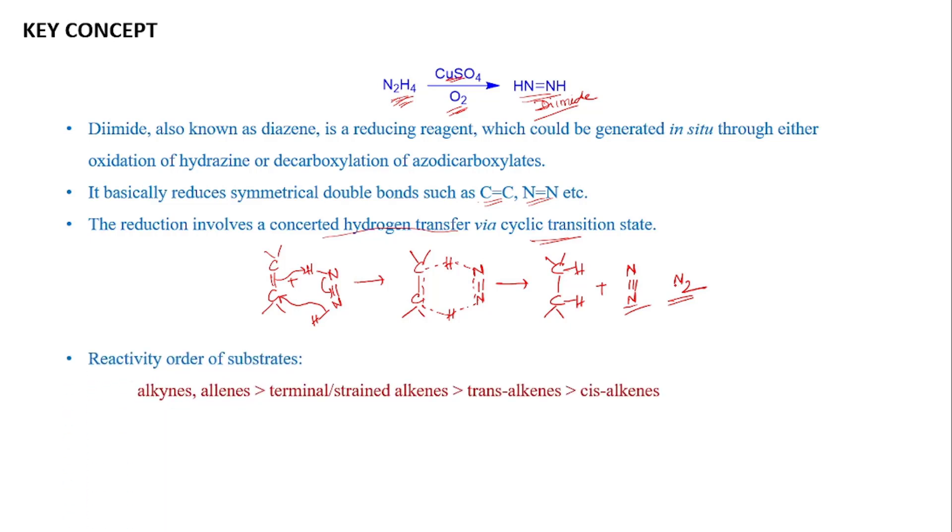Based on the functionalities present in any substrate, reactivity of the substrate towards this hydrogenation process would be different. If we see the order of reactivity, it looks like alkynes and allenes undergo hydrogenation faster than terminal or strained alkenes followed by trans and cis alkenes.